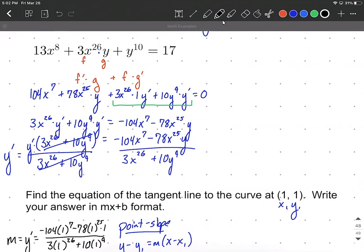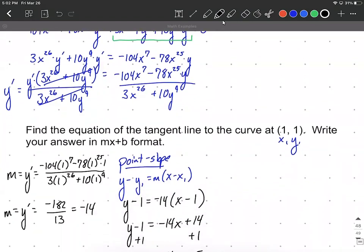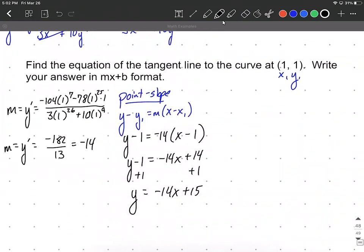After that, get all the y primes on one side. Everything that doesn't have a y prime, take it to the other side. Do a little bit of factoring out a common factor. And then get y prime by itself. Y prime is going to mean the same thing as the slope of the tangent line.